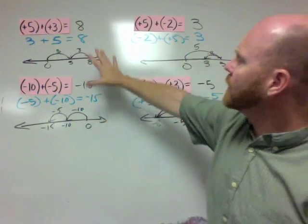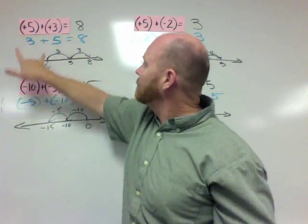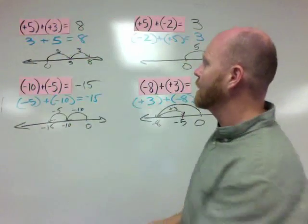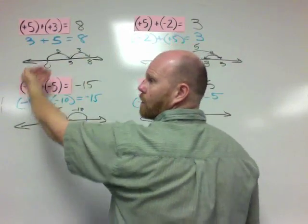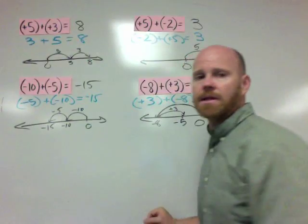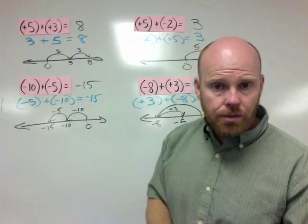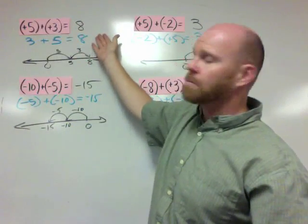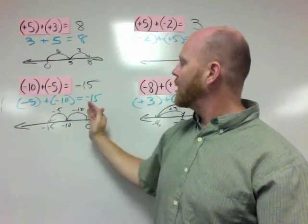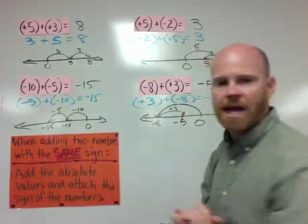Looking at the patterns, this column has problems where we're adding the same signs — up here two positives, down here two negatives. The hops are both going in the same direction: two hops to the right, or two hops to the left. In that case, all we have to do is add the absolute values. If the signs were both positive, the answer is positive because they're both hopping to the right. If the signs were both negative, the answer is negative because they were both hopping into the negative side of the number line.